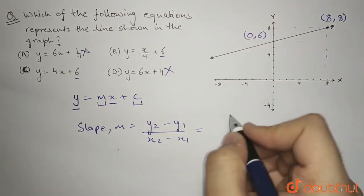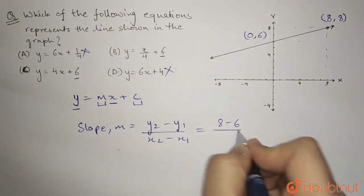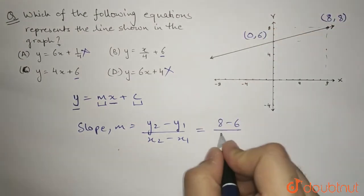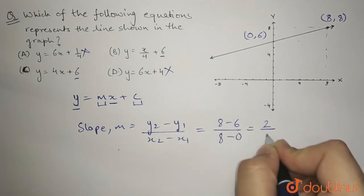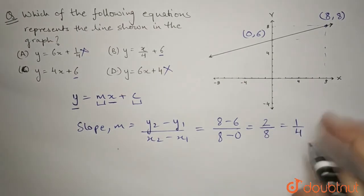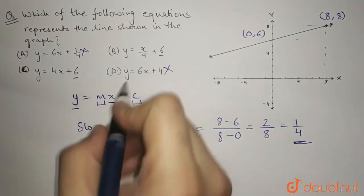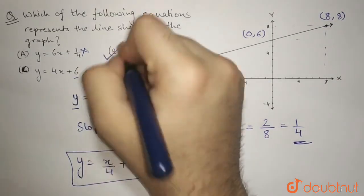Now plugging these values in the equation we get 8 minus 6 divided by 8 minus 0. So it's 2 over 8 which is 1 over 4. Alright so slope is 1 over 4. This equation is y equals x by 4 plus 6. Hence b is the correct answer.